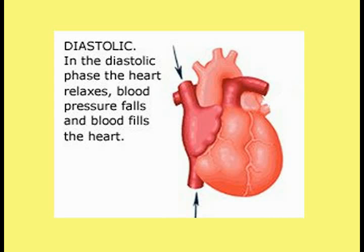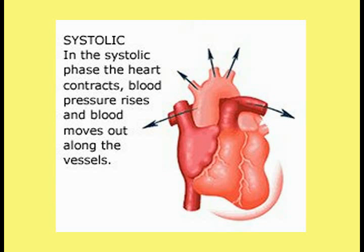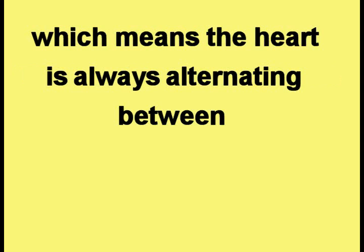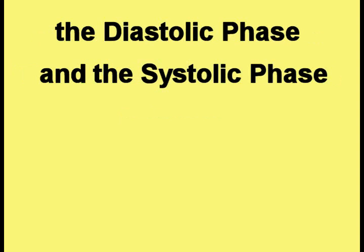In what is called the diastolic phase, the heart relaxes so that blood can enter into and fill the heart. Then, in what is called the systolic phase, the heart contracts, which forces the blood in the heart back out into the body. The heart beats constantly, which means that the heart is always alternating between the diastolic phase and the systolic phase.